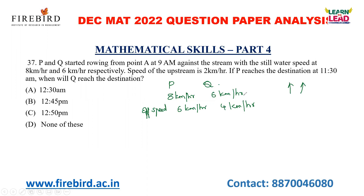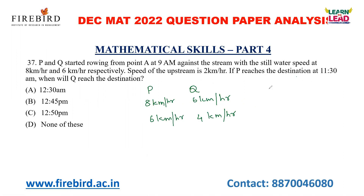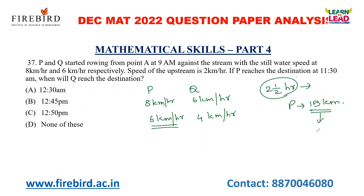Now, if P reaches the destination at 11:30, the time taken by him is 2 and a half hours. We know the effective speed of P is 6 km/h. In 2.5 hours, P would have traveled 15 km. The same 15 km should be traveled by Q. The effective speed of Q is 4 km/h. Time taken to travel 15 km: distance 15 divided by 4 is 3 hours 45 minutes. Both started at 9 a.m., so after 3 hours 45 minutes, the time will be around 12:45. That is your answer.